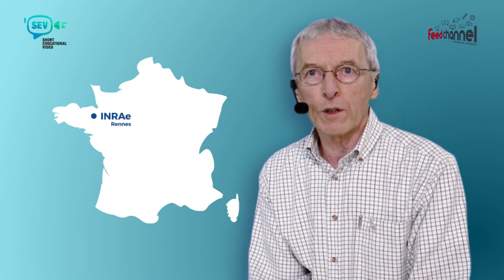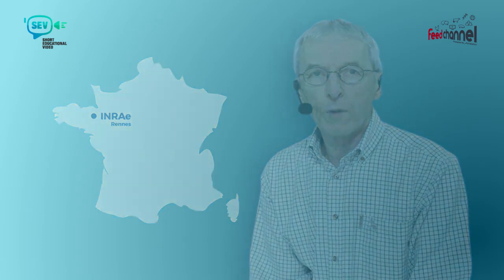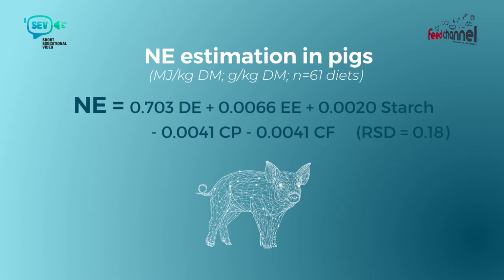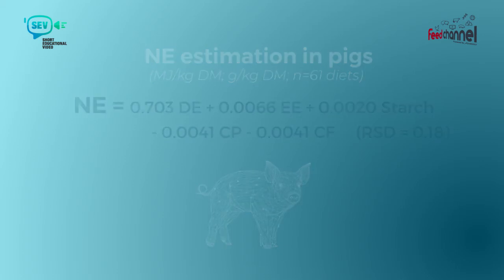This is based on a large-scale study conducted in France in the 80s and 90s. One example of these equations shows that the net energy of the feed is a function of the DE content of the feed plus or minus some factors related to the crude nutrients. Ether extract and starch have a positive effect, while crude protein and crude fiber have a negative effect on the energy value.